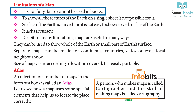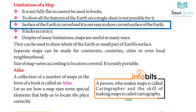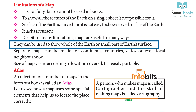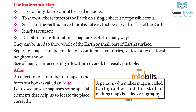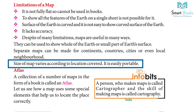Limitations of a map: it is not fully flat, so it cannot be used in books to show all the features of the earth on a single sheet. The surface of the earth is curved and it is not easy to show a curved surface. It also lacks accuracy. Despite these limitations, maps are useful — they can show the whole earth or a small part, and separate maps can be made for continents, countries, cities, or even local neighborhoods.